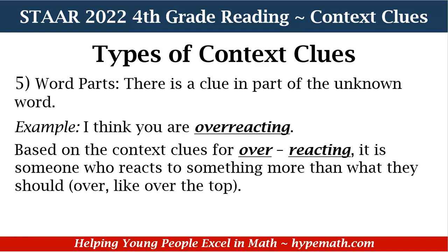Our next type of context clue is word parts — a clue found in part of the unknown word. Our example says: I think you are overreacting. We can break this word down: over + reacting. It means someone who reacts to something more than they should. We know this because "over" means over the top — they're doing a little too much.